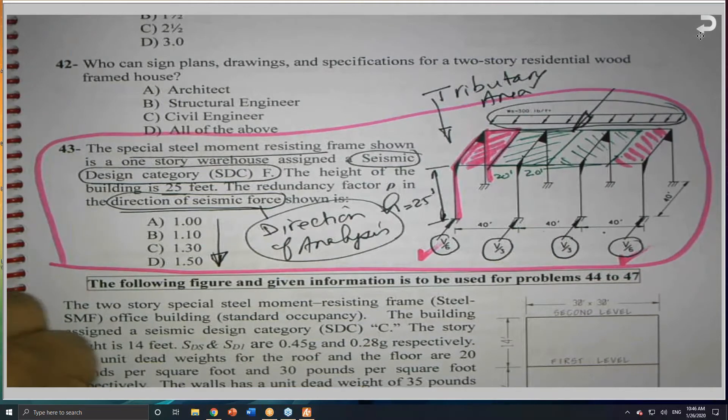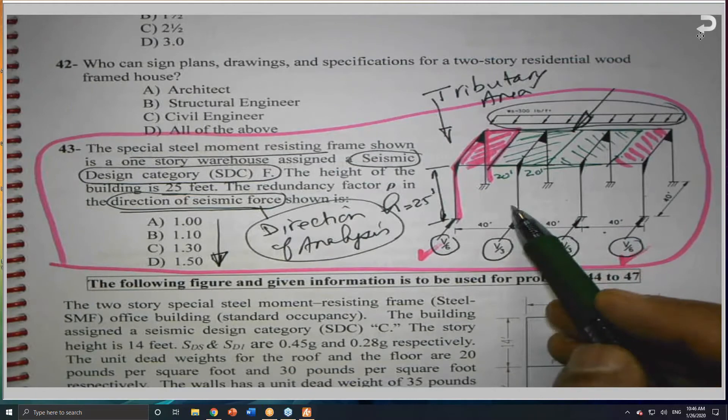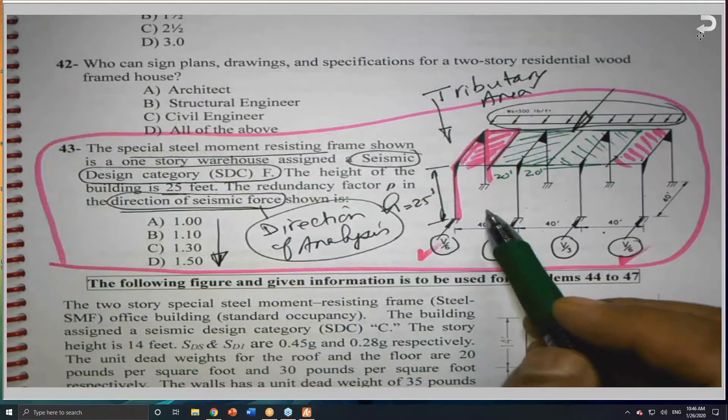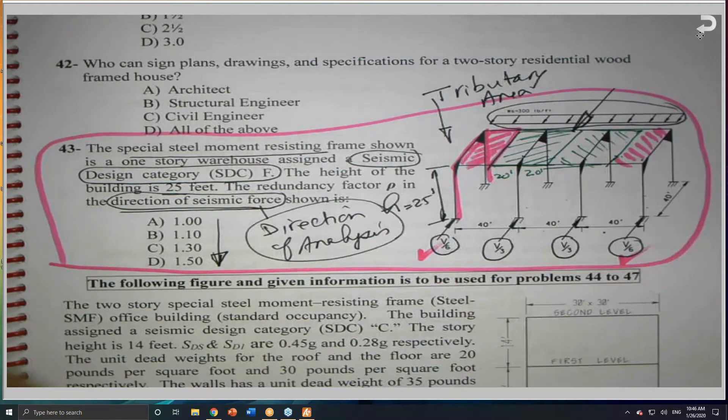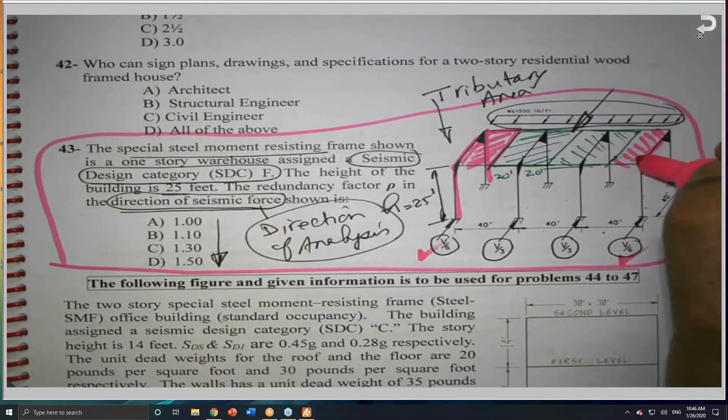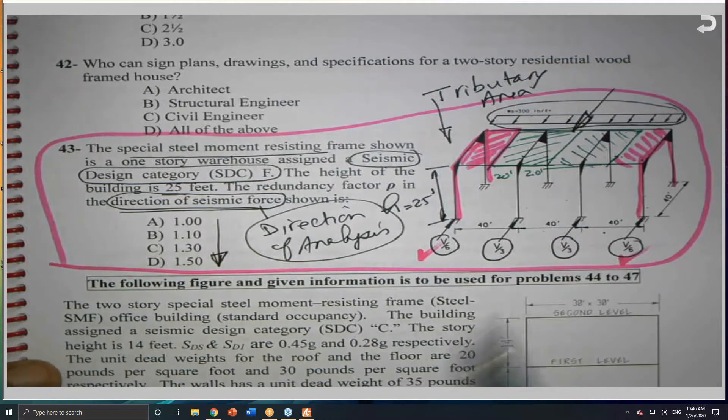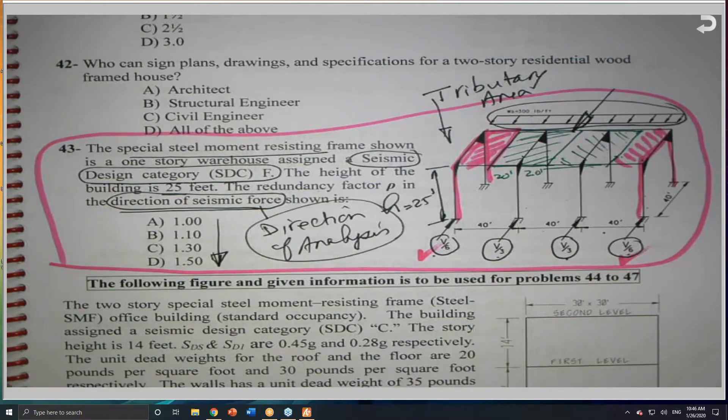So basically, we have four frames. The two middle ones, they are carrying the larger width, which is 20 feet on each side. So 20 and 20, so this is 40 and 40. But the exterior frames are carrying only half of the load. And this is why you'll find that one-third and one-third. And these two, they are carrying one-third. So this will give me the total force. This is called the tributary area. And we're going to talk about this before.